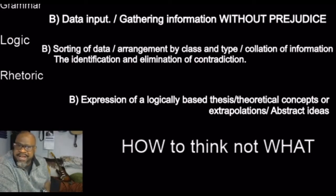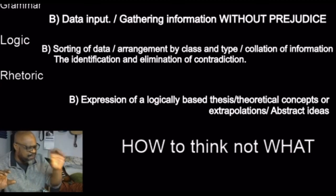Our next step is to sort this information, the sorting of data, the arrangement by class and by type, the collation of information and the identification and the elimination of contradiction. We have first gathered data. Now we are processing said data, putting things where they belong, arranging things as they are, which makes it easy to make very accurate comparisons.